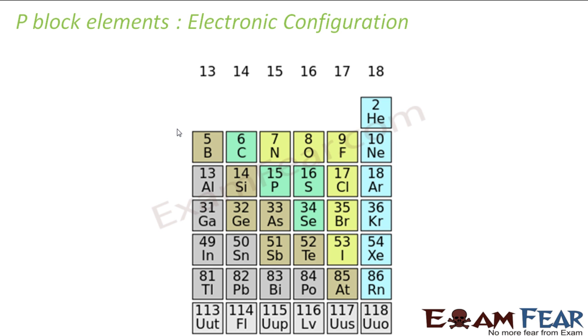So let's start with the electronic configuration first. If you see the electronic configuration, these are my P-Block elements. My electronic configuration is ns2 np1-6, that is my electronic configuration.